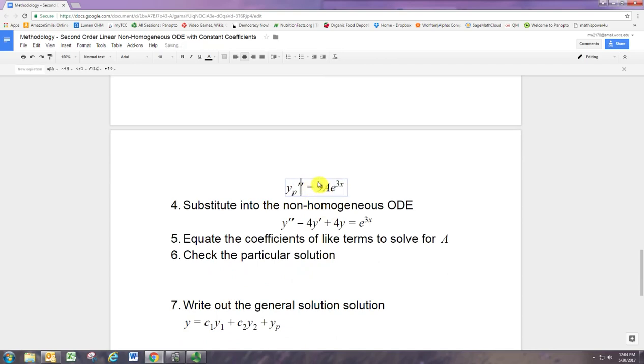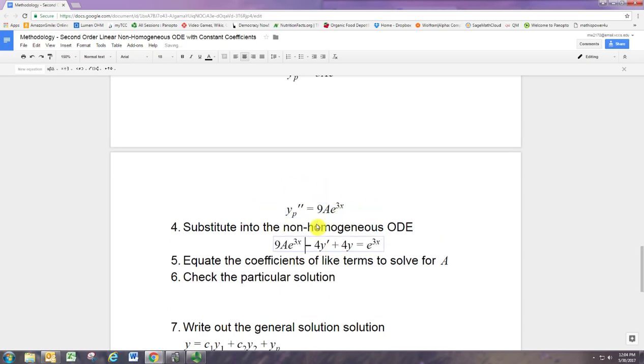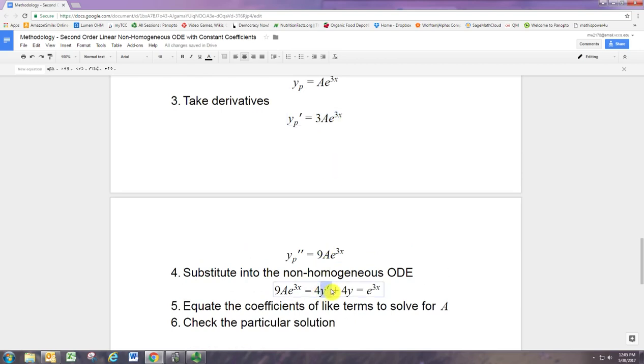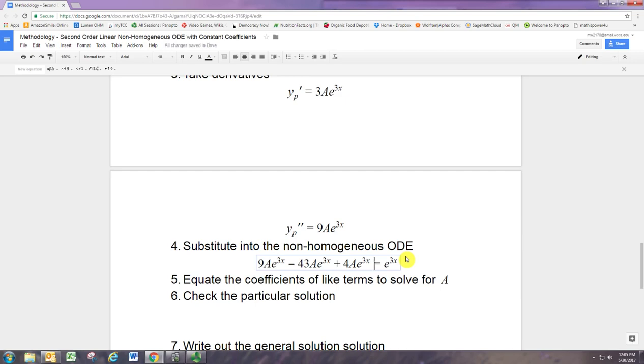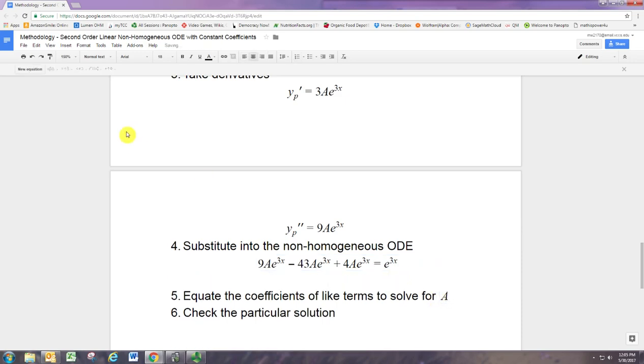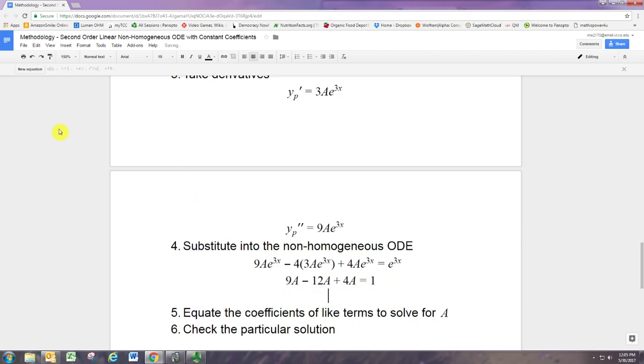Oops, I forgot to put a second derivative in there. Right? And you see everything has e to the 3x. So that's just going to be divided away. And we're going to have, oops, that's not a 43 that should be 4 times 3. So we've got 9a minus 12a plus 4a should all equal 1. Right? That's the coefficient on the right-hand side. So there's not a lot of equating coefficients because there's just constants here. And this actually just simplifies. Right? 9 and 4 is 13. Minus 12 is just going to tell us that a is 1.